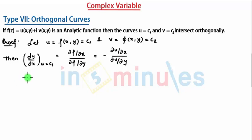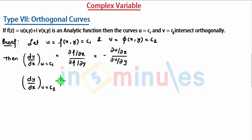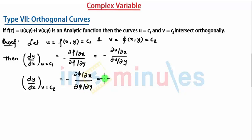In the same way, when we write dy/dx at v = c2 for the second curve, we get minus of (∂φ/∂x) divided by (∂φ/∂y), which we can write as minus (∂v/∂x) divided by (∂v/∂y).